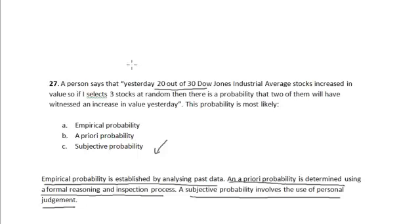His assessment is not based on historical data; rather, he is using formal judgment and the inspection process to arrive at his conclusion. Hence, it is most likely an example of a priori probability, so option B is the correct option.